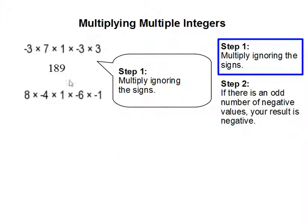So we're simply going to multiply these numbers out, and we're going to ignore the sign. So 3 times 7 times 1 times 3 times 3 gets us 189. 8 times 4 times 1 times 6 times 1 gets us 192.